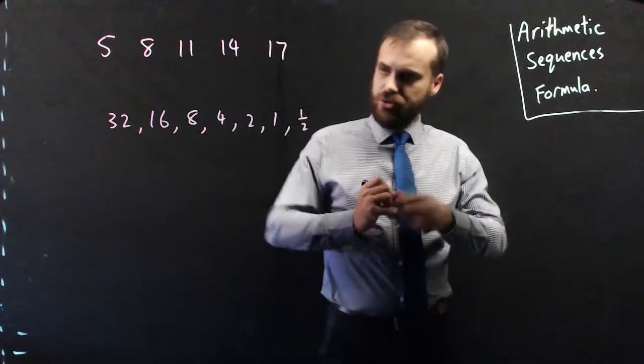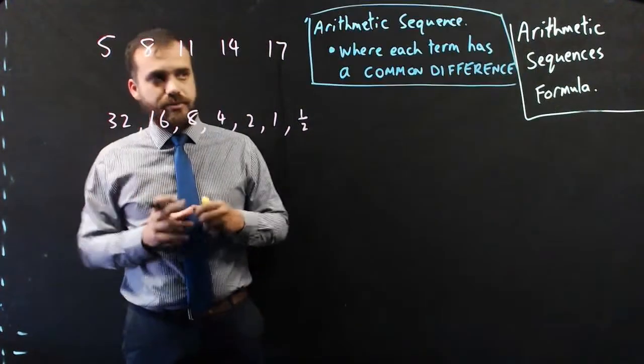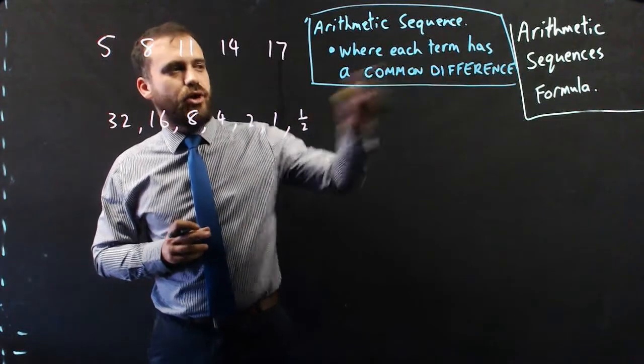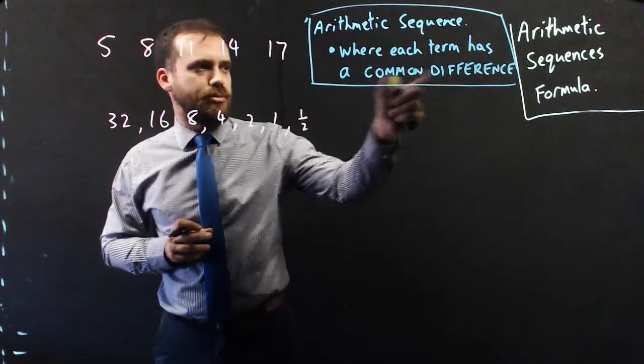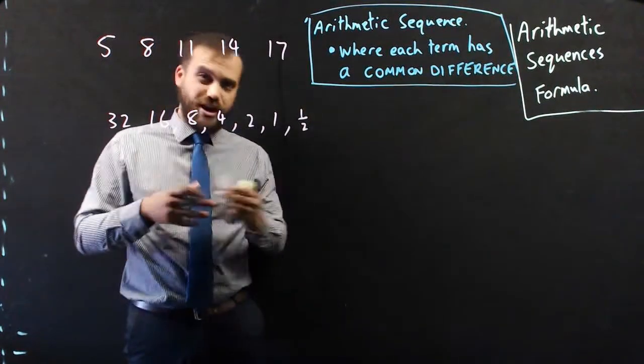So an arithmetic sequence is one where each term has a common difference, a common difference. Difference, as in subtract one from the other.